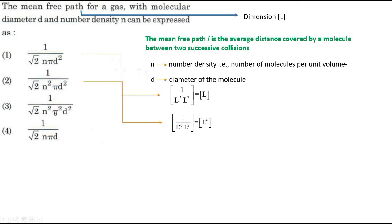Now you will see the dimension for this. Same way. One, no dimension. Root 2, no dimension. Pi squared, no dimension. N square, L power minus 6. D square, L square. Simplify. L power minus 4 in the denominator. Take it to the numerator. L power 4. Understood this?